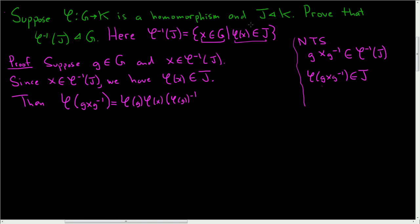And I didn't write it down, but we assumed that φ was a homomorphism and J was normal in K. So it turns out that this is in J. And φ(X) is in J. So that's why this element is in J.